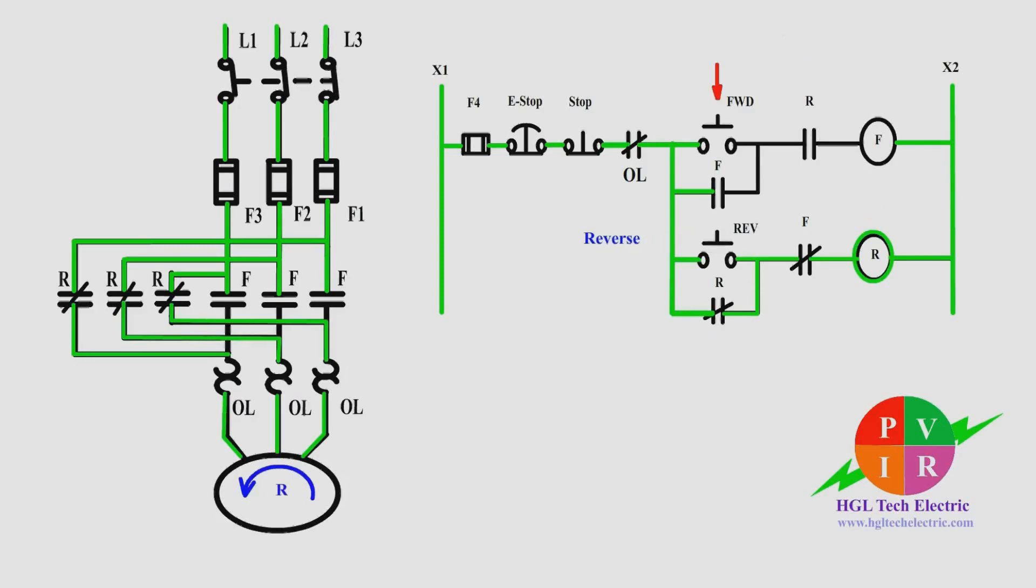Now, in this case, the normally closed auxiliary contact R that is connected in series with coil F is open. Preventing a short circuit from occurring if an operator accidentally presses the forward button.